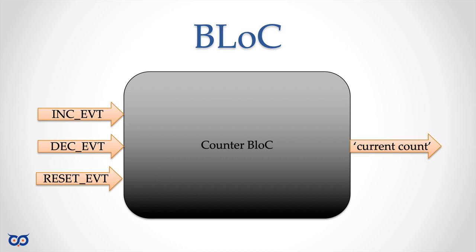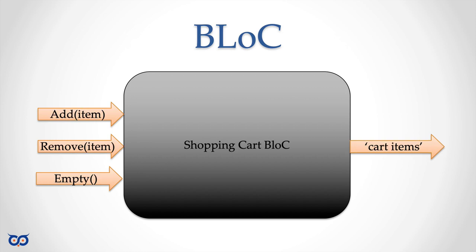Here's a BLoC — I've simply renamed 'state machine' to a 'block'. This is our counter block, and these are the three events we're going to support. Inside this black box we keep track of the counter: we increment the value when we see an increment event, decrement when we see a decrement event, and reset when we see a reset event. Every time our counter is modified — whether increment, decrement, or reset — we spit out the current counter value.